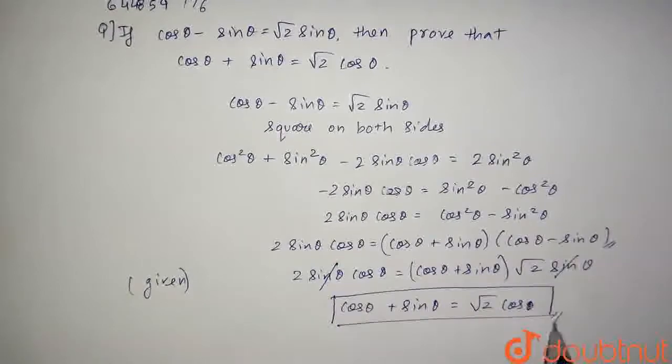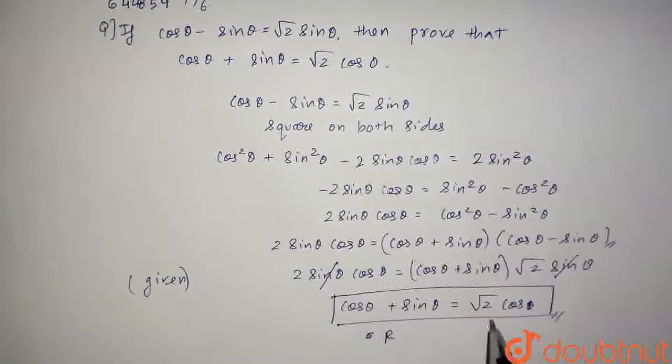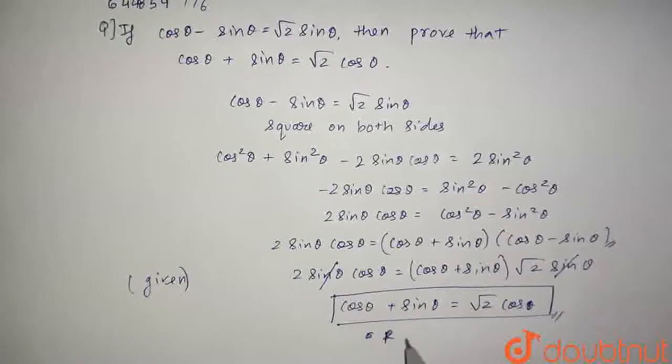This is what we had to prove. This is equal to the RHS. So basically, root 2 cos θ is equal to cos θ plus sin θ and it is proved.